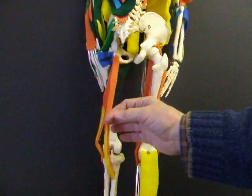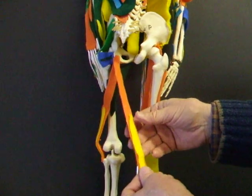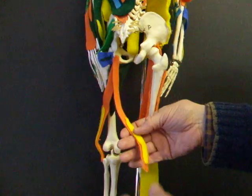Well, now we're looking at one of the hamstrings, and this one is put on here as a combination of semitendinosus and semimembranosus.